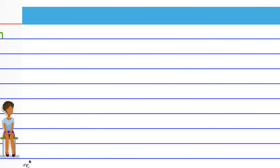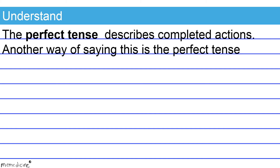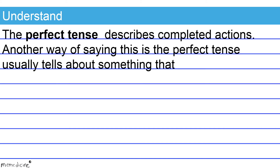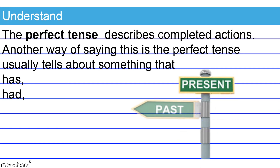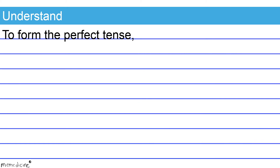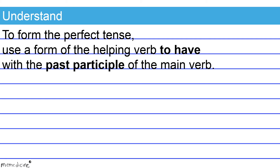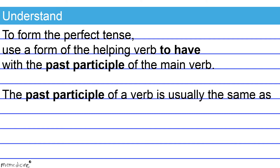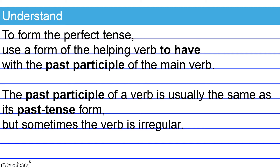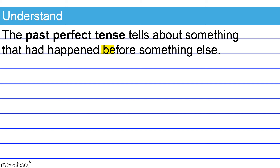perfect verb form. The perfect tense describes completed actions — another way of saying this is the perfect tense usually tells about something that has, had, or will have happened. To form the perfect tense, use a form of the helping verb 'to have' with the past participle of the main verb. The past participle of a verb is usually the same as its simple past tense form, but sometimes the verb is irregular. The past perfect tense tells about something that had happened before something else.